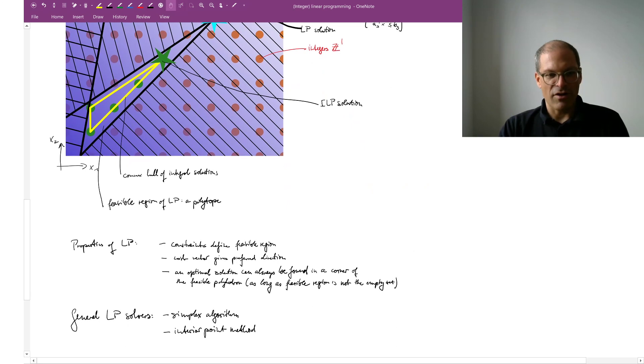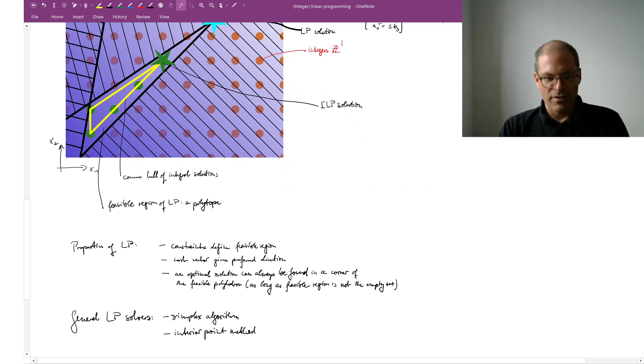So properties of a linear program: the constraints define the feasible region. The feasible region is always a polytope. The cost vector gives the preferred direction or the opposite of the preferred direction. If I now walk as far as I can against the direction of the cost vector and if I try to stay inside this feasible region, the polytope, then an optimal solution can always be found in a corner of the feasible polyhedron if that one is not the empty set.